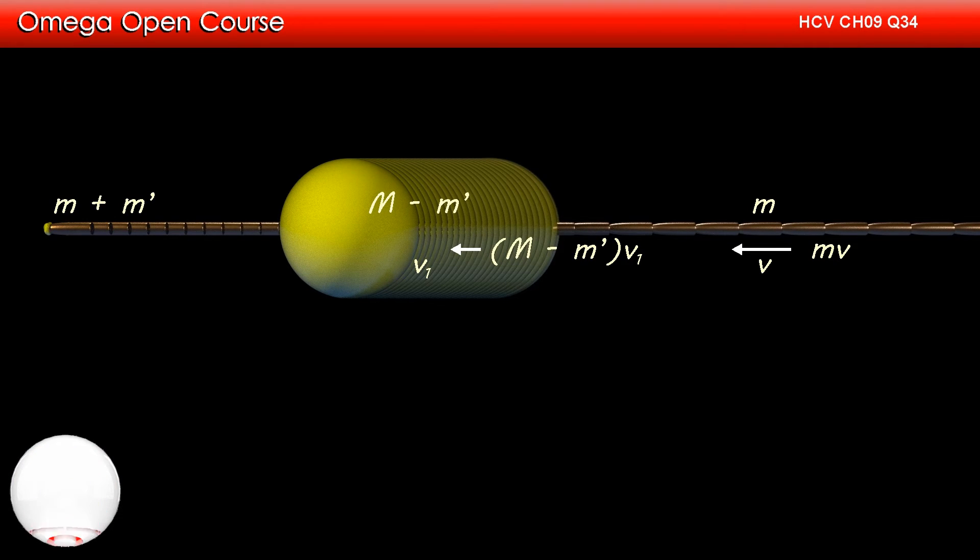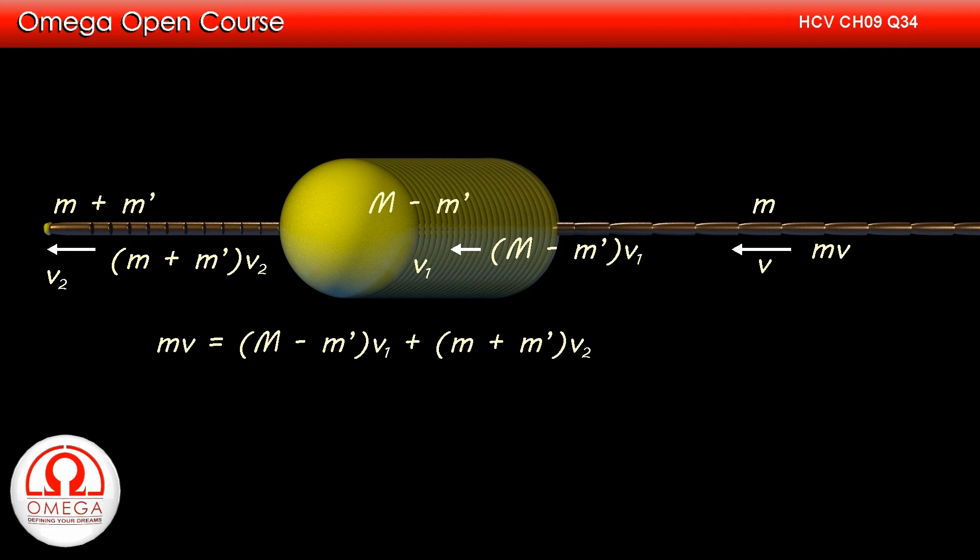The mass of the bullet along with the part of the ball sticking on it is M plus M'. If we assume its speed to be V2, then its momentum after the collision is M plus M' into V2. Since there is no external force acting on the system, the momentum of the system must be conserved. Therefore, MV must be equal to capital M minus M' into V1 plus M plus M' into V2.